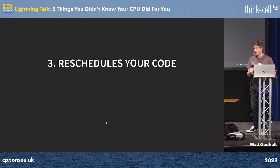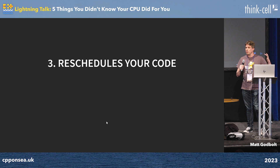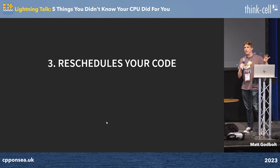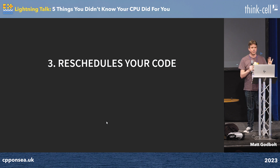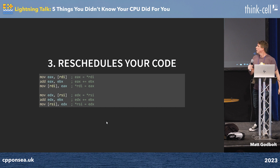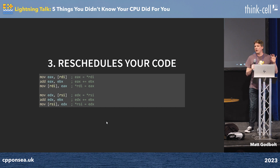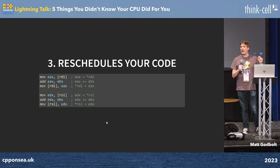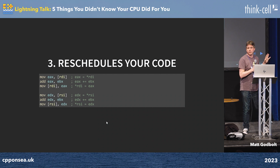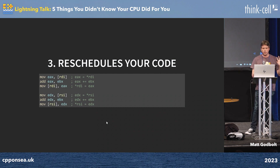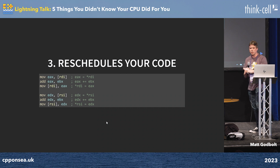Which brings me to the third point: it reschedules your code. Just like your operating system can interleave and run multiple threads at the same time — provided they're not accessing the same data with mutexes and stuff — this can happen inside your CPU. These two iterations of the loop can in fact run concurrently, if you have adders and subtractors and multipliers available, which is awesome — except there are data dependencies between them, so you can't always do that.